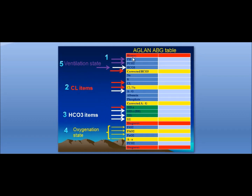The AGLAM table is formed of measured values and calculated values. Start with: number one, the pH; number two, the chloride items — serum chloride, chloride-to-sodium ratio, corrected bicarbonate, and strong ion difference; number three, bicarbonate items — serum bicarbonate, anion gap, buffer base, strong ion gap, and base excess; number four, oxygenation state of the lung — FiO2, PaO2, alveolar oxygen, partial pressure of oxygen, and alveolar-arterial gradient; number five, ventilation state.